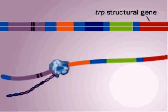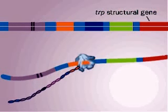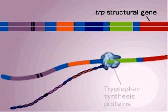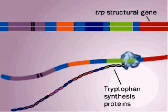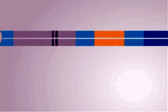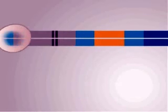When the trp-tRNAs appear, translation continues through the structural genes, and thus more tryptophan is produced.